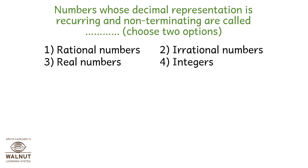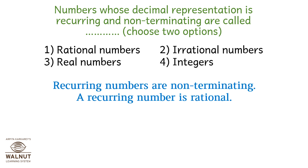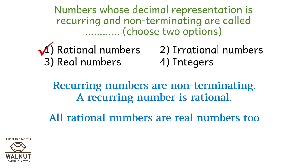Numbers whose decimal representation is recurring and non-terminating — choose two options. A recurring number is non-terminating and a recurring number is rational, so take option 1. All rational numbers are real numbers too, so take option 3.